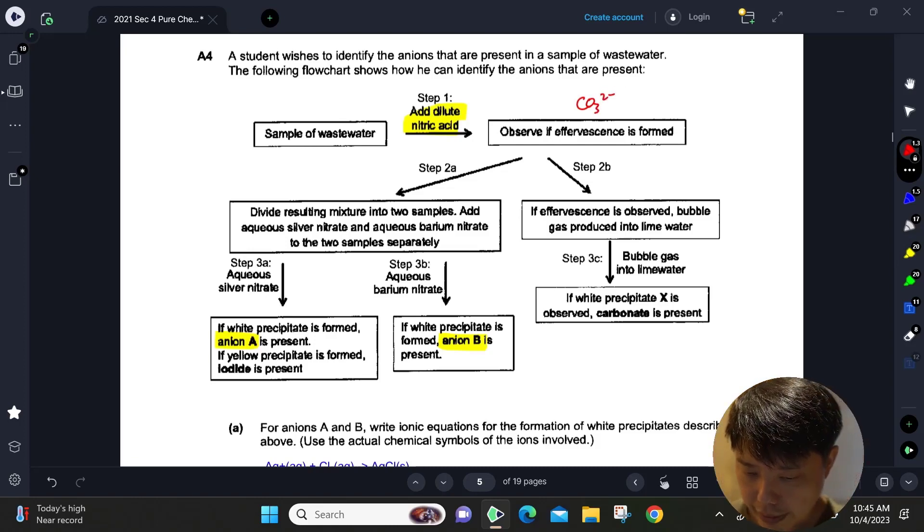Step 2a: divide the resulting mixture into two samples, add silver nitrate and barium nitrate into the two mixtures. So silver nitrate, Ag⁺, is actually testing for your halogen, things like F⁻, Cl⁻, Br⁻, I⁻, group seven ions.